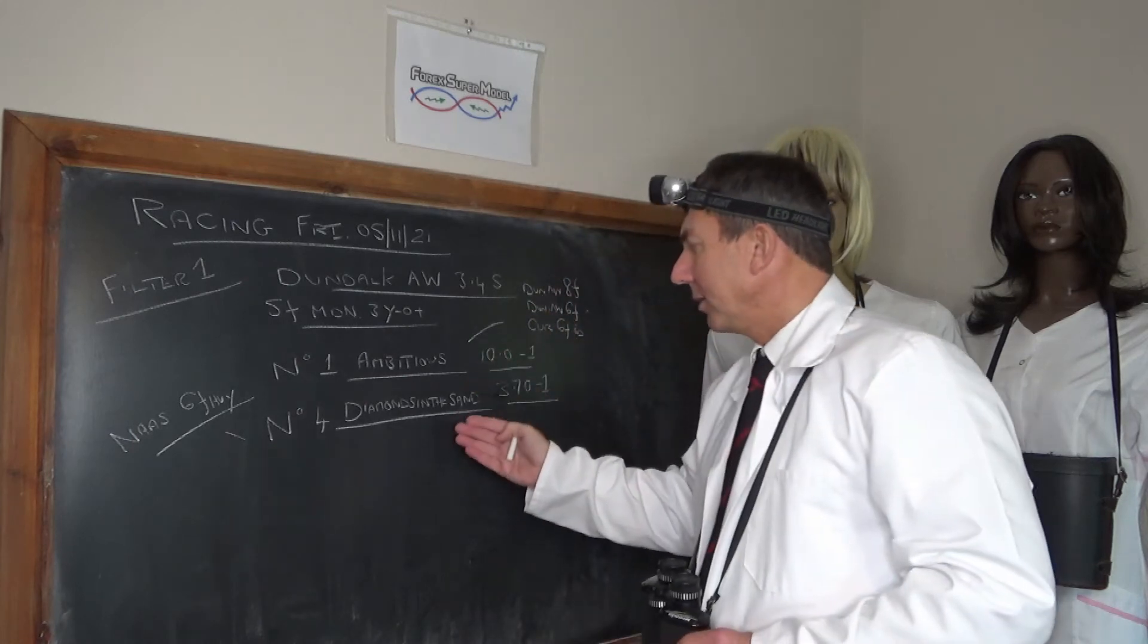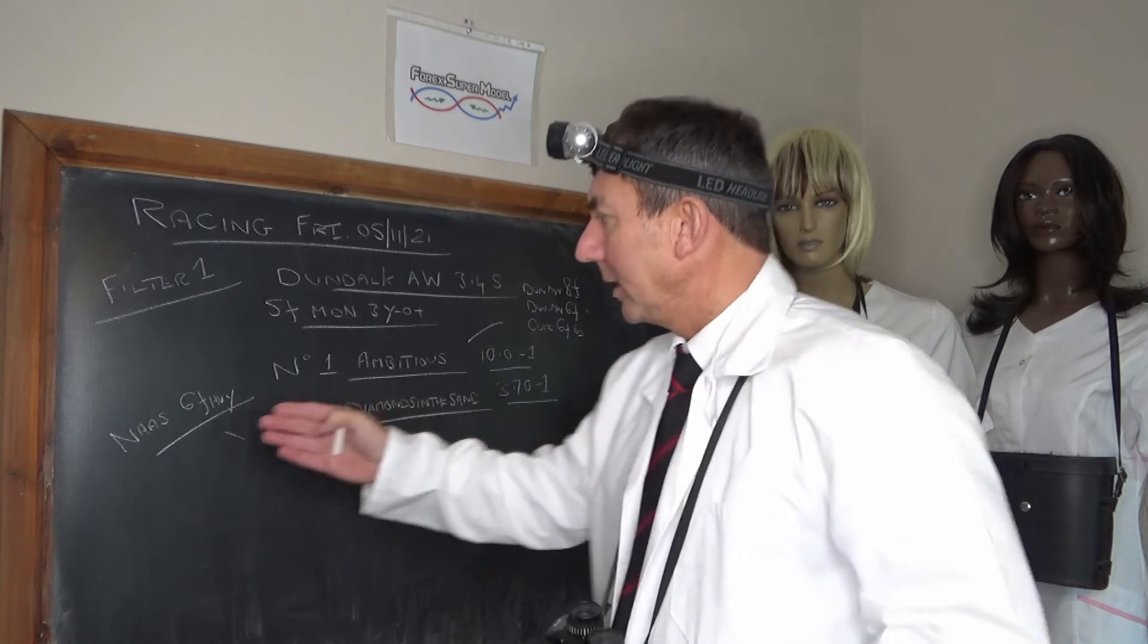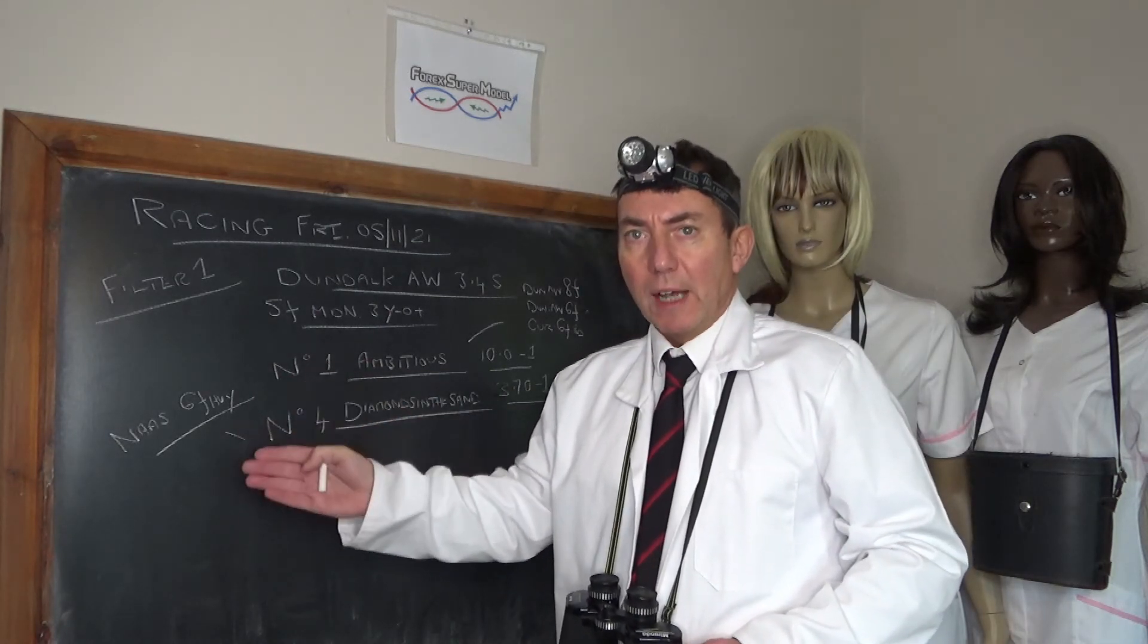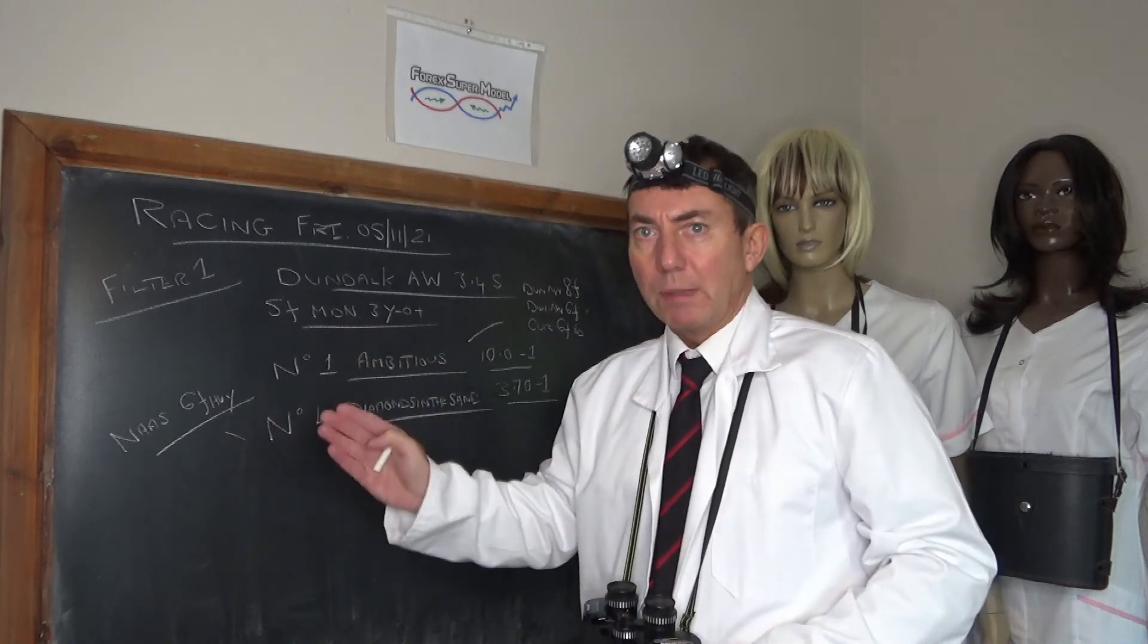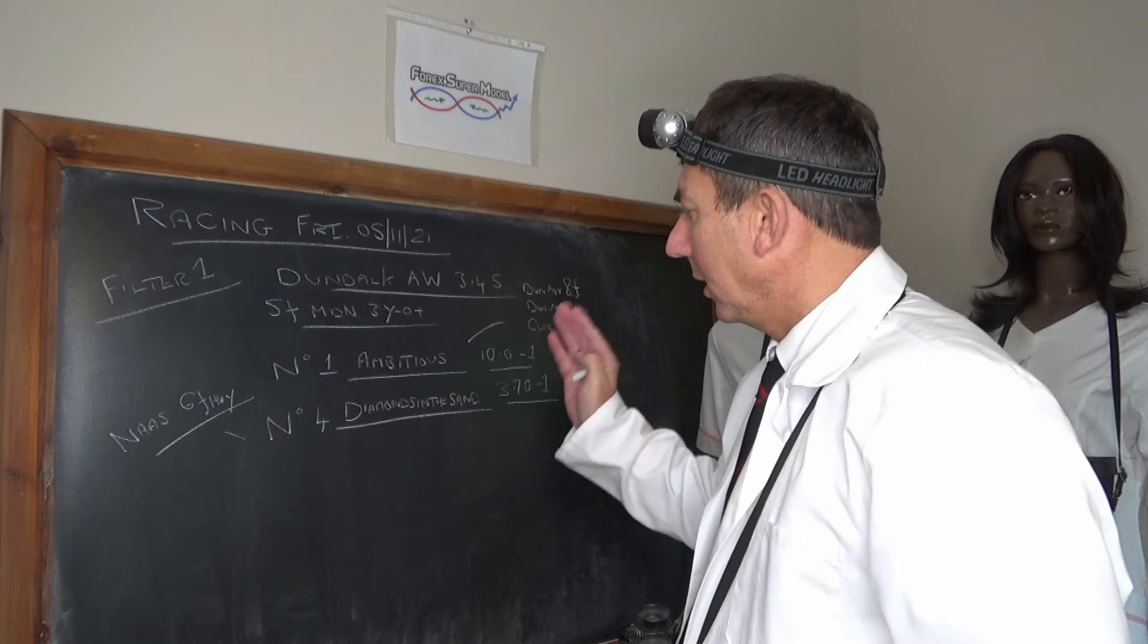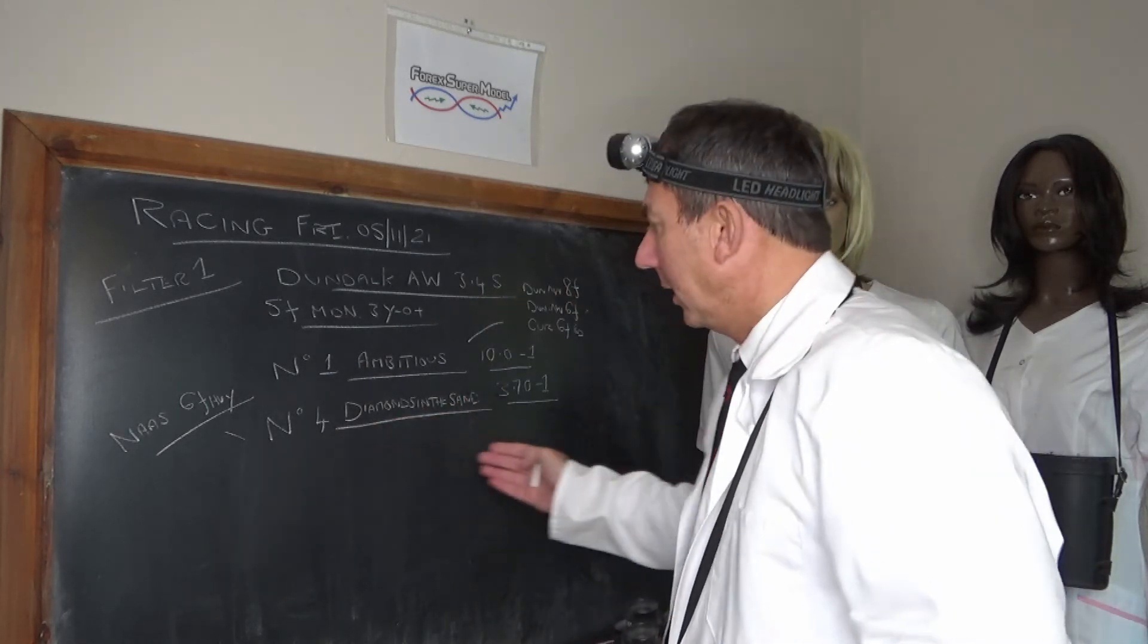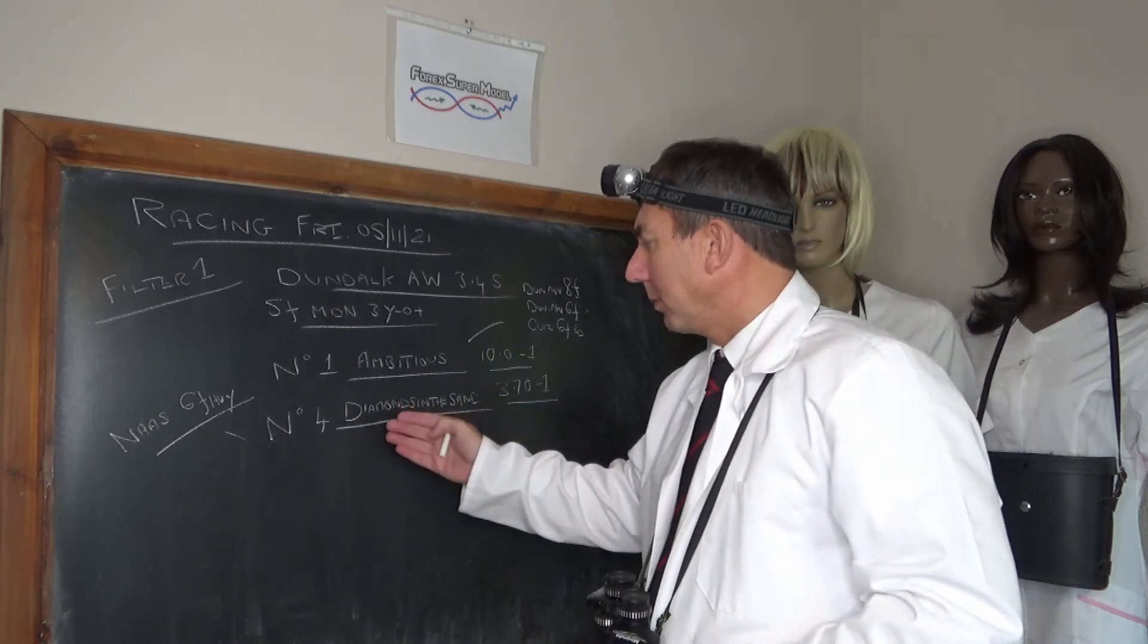And the second one then, Diamonds in the Sand, number four. This horse was running at Naas, which is a very stiff course in the heavy, uphill, and it was heavy. And this horse showed tremendous power and speed. This was in a six furlong race and we're now five furlongs. Dundalk on the all-weather should be ideally suited.